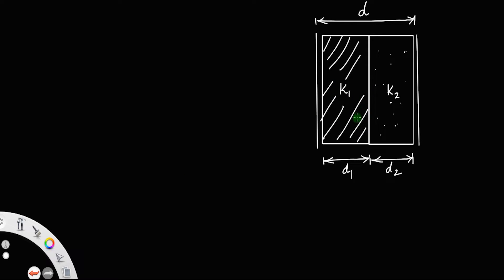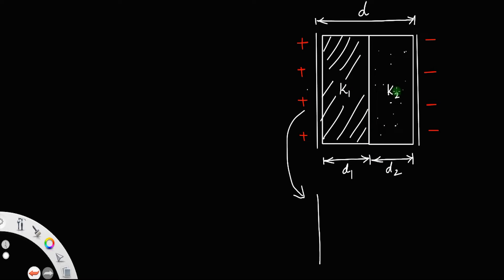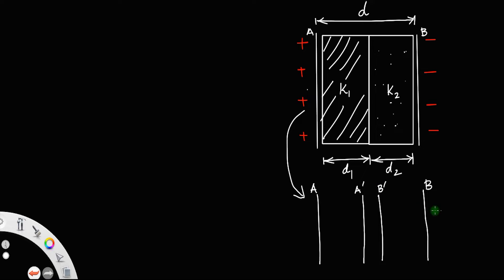How will you find the effective dielectric constant? This combination is in series because I can redraw it. The left plate will be positively charged and the other plate will be negatively charged. Suppose I introduce two additional plates between the dielectrics — a plate a-dash and a plate b-dash. I have plate a and plate b, with a-dash and b-dash introduced between them.